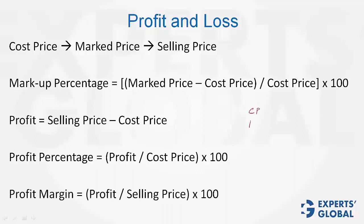If there is a product with a cost price of $100 and the selling price is $200, then profit % would be 100% because it's $100 profit on a $100 investment. Profit margin, however, will be only 50% because out of the total selling price, only $100 is the profit. Please have this distinction very, very clear.